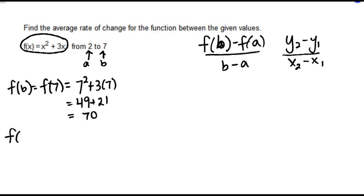Then we'll find f(a). f(a) is f(2), that's 2² + 3(2). 2² is 4, 3 times 2 is 6, and 4 + 6 is 10.